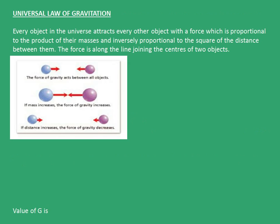Let's move on to the universal law of gravitation. It says that every object in the universe attracts every other object with a force which is proportional to the product of their masses and inversely proportional to the square of distance between them.